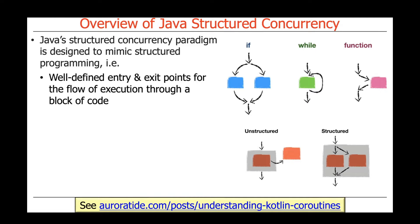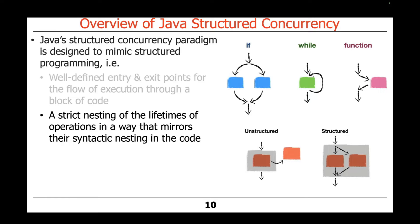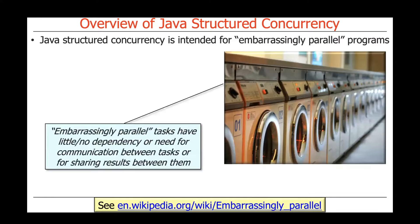In particular, there are well-defined entry and exit points for the flow of execution through a block of code — in an if statement, a while loop, or a function. And there's a strict nesting of the lifetimes of operations — things like local variables — that mirrors the syntactic nesting in the code. The same holds true for structured concurrency, as well as other types of structured programming.